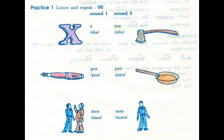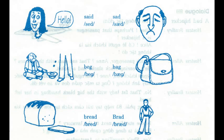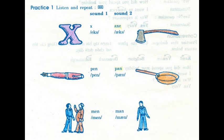Sound 2: axe, pan, man, sad, bag, Brad. Now the sounds in contrast.